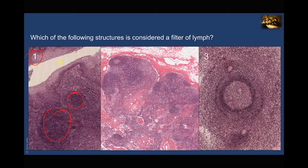The palatine tonsil provides immunologic protection against invasion by pathogens via the vulnerable exposed absorptive surfaces at the beginning of the gut. This palatine tonsil does not receive an afferent lymphatic vessel, but it drains by efferents into the upper deep cervical group of lymph nodes. So this is not the correct answer.